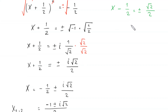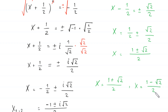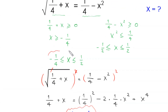Moving negative 1/2 to the right hand side: x = (1 ± √2) / 2. This gives x₃ = (1 + √2)/2 and x₄ = (1 − √2)/2. Now we apply the domain condition — x must be between negative 1/4 and 1/2 — to remove invalid solutions.